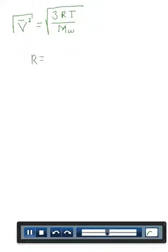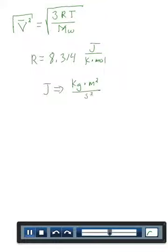Now, R in this case, we're using different set of units. We're going to use units of joules per kelvin times mole. And a joule is a derived unit and consists of kilograms times meters squared per second squared.